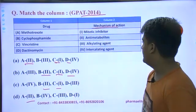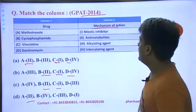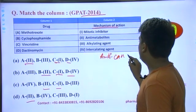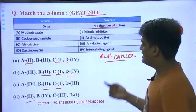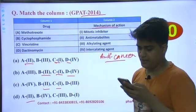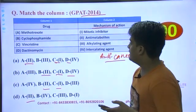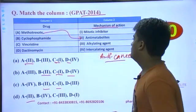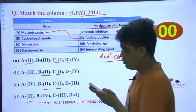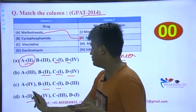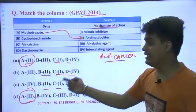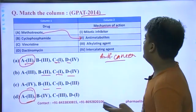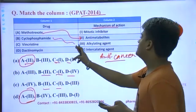All these drugs belong to the category of anti-cancer drugs. I hope you remember methotrexate — all these drugs are from the chapter of anti-cancer pharmacology. Let's go through each one by one. The first option is an anti-metabolite. Moving to the next option, which is B.